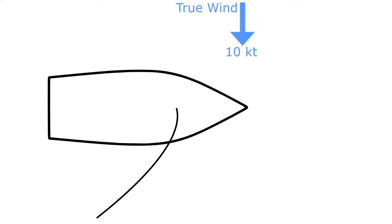As an example, let's say we have a 10-knot true wind blowing directly off of our beam. Now once we start moving and get up to a speed of 6 knots, we start to experience a second wind. This is called the velocity wind. It is created by the movement of the boat through the air. It doesn't matter if you move through the air or the air is moving towards you — to the boat, it all feels and acts the same.